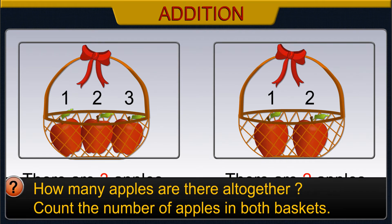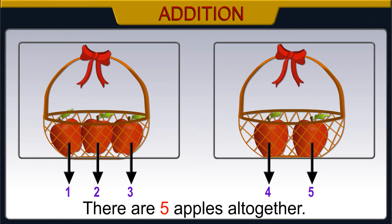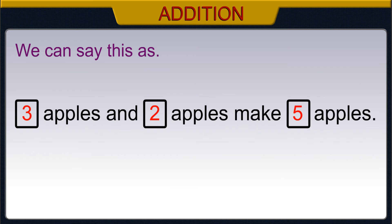How many apples are there altogether? Count the number of apples in both baskets: one, two, three, four, five. There are five apples altogether. We can say this as: three apples and two apples make five apples.